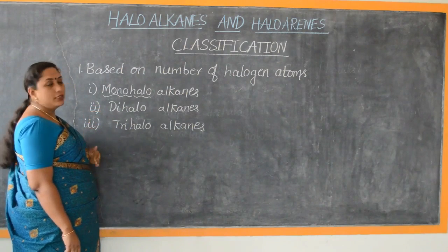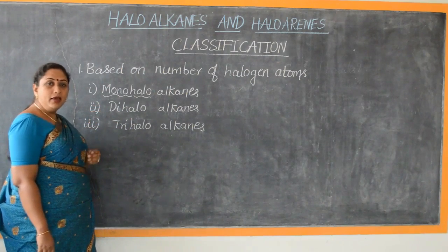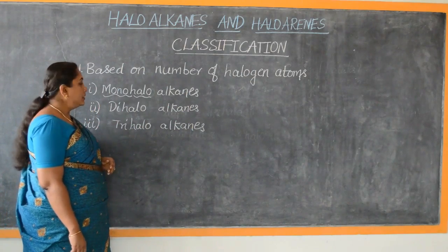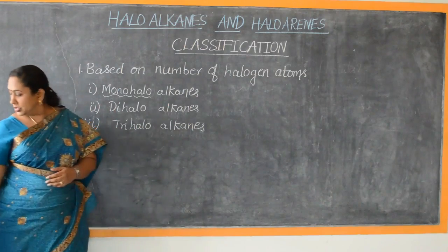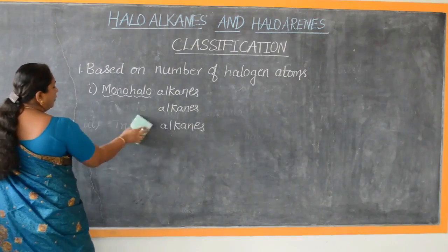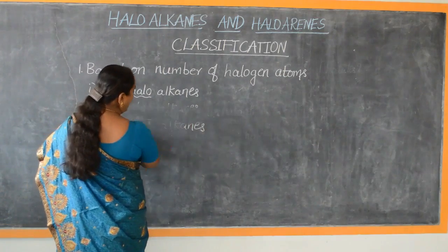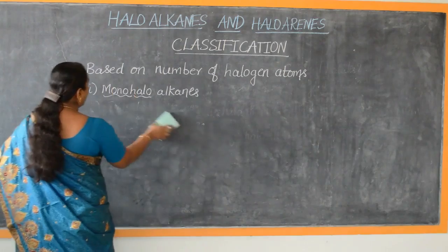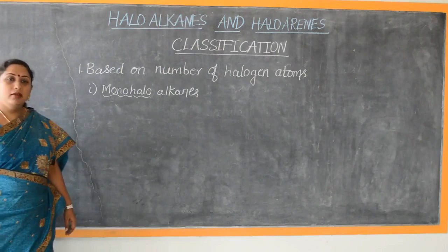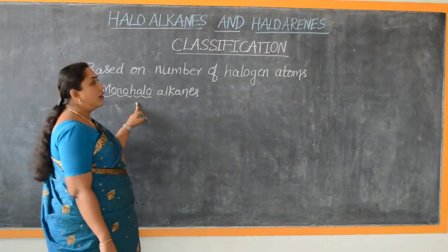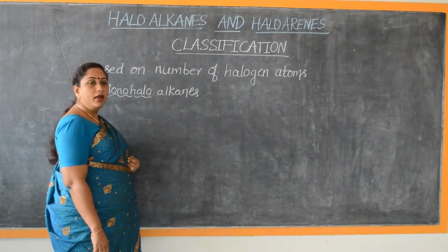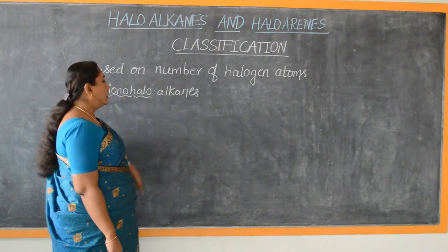In the next video lessons, I will be dealing in detail with di-haloalkanes and tri-haloalkanes. Now, let us take up in detail the study of mono-haloalkanes. Mono-haloalkanes are the haloalkanes which contain one halogen attached to the alkyl group.